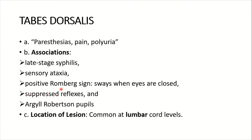There is involvement of the dorsal column medial lemniscus, which I will tell you about later. Suppressed reflexes and Argyll Robertson pupils — I will tell you later with a picture. The location of the lesion is commonly at lumbar cord levels.